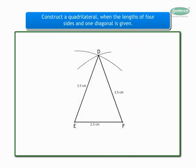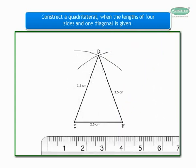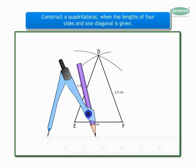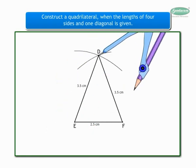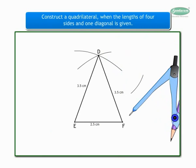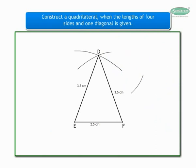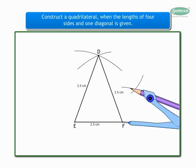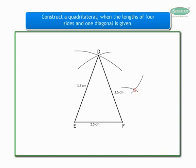Similarly, as we want the measure of side DG as 2.5 cm, we will take the measure of 2.5 cm on the compass and draw an arc from point D. And as we want the measure of side FG as 1.7 cm, we will take 1.7 cm on the compass and draw another arc from point F intersecting the arc drawn from point D.